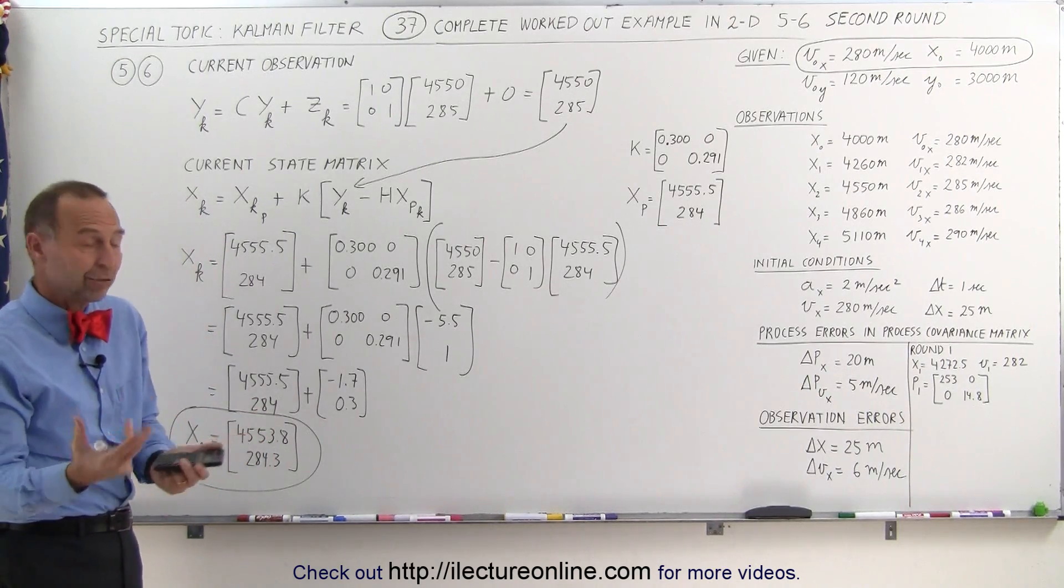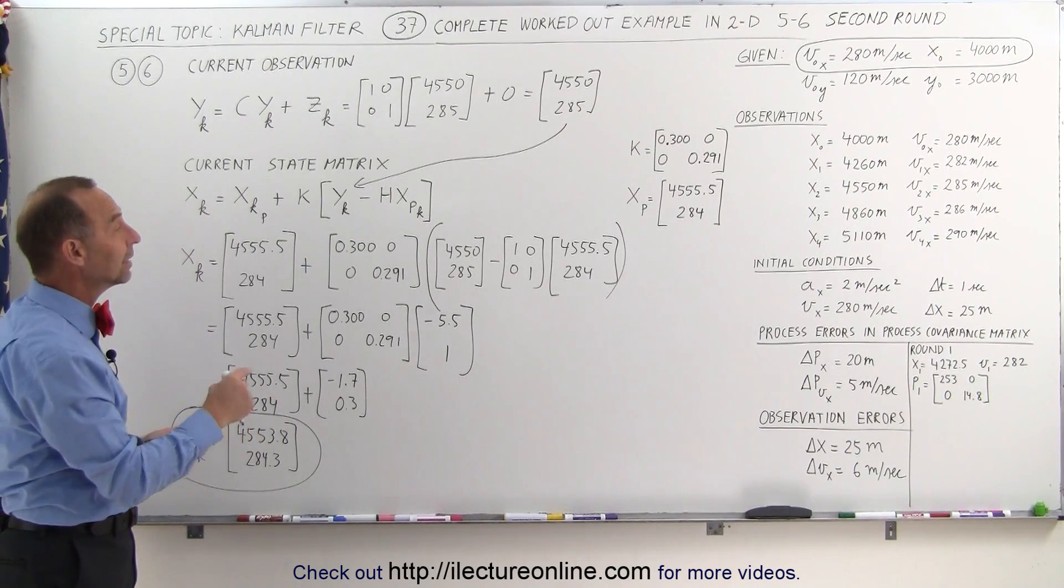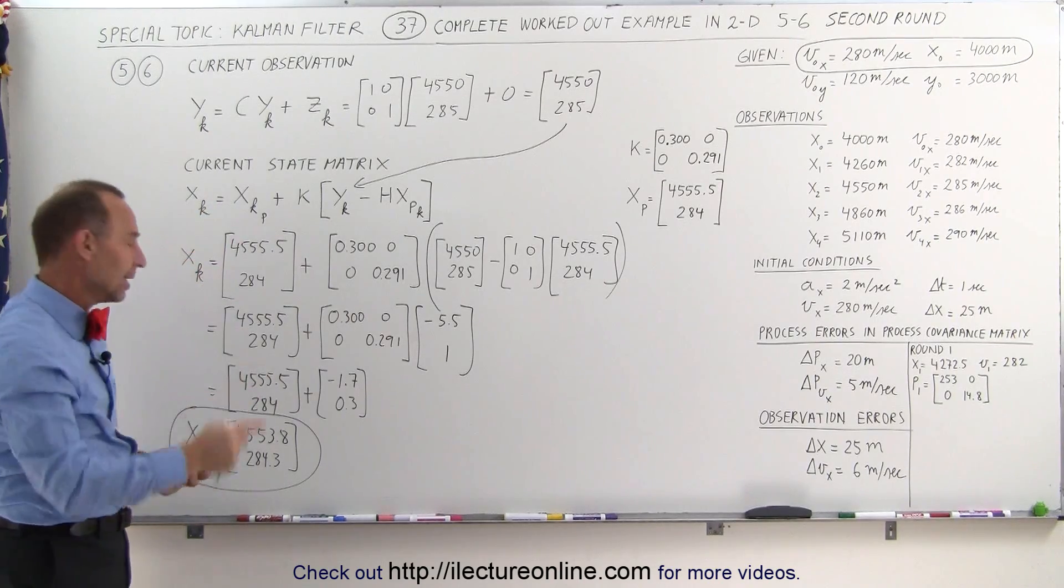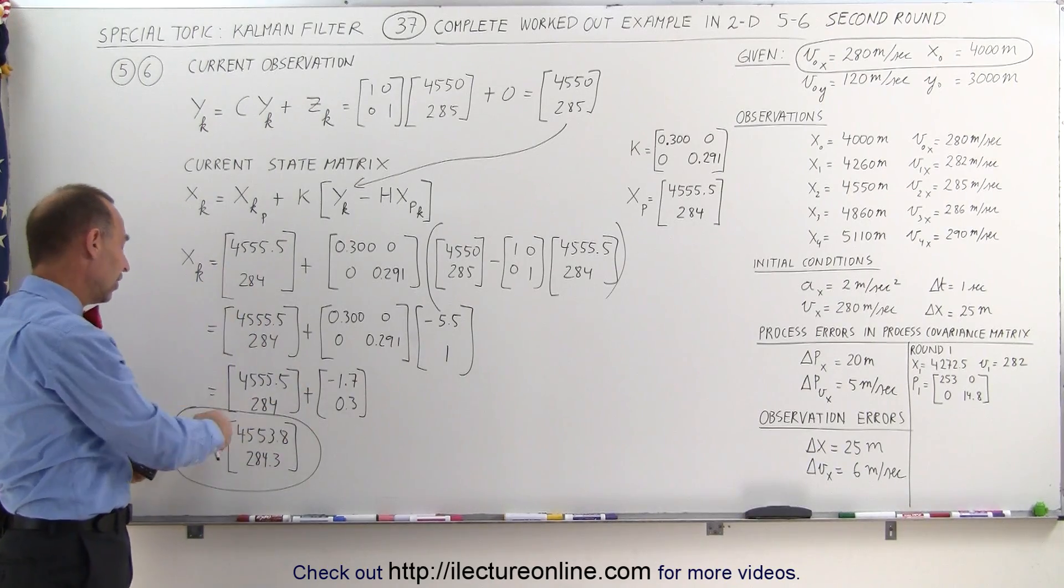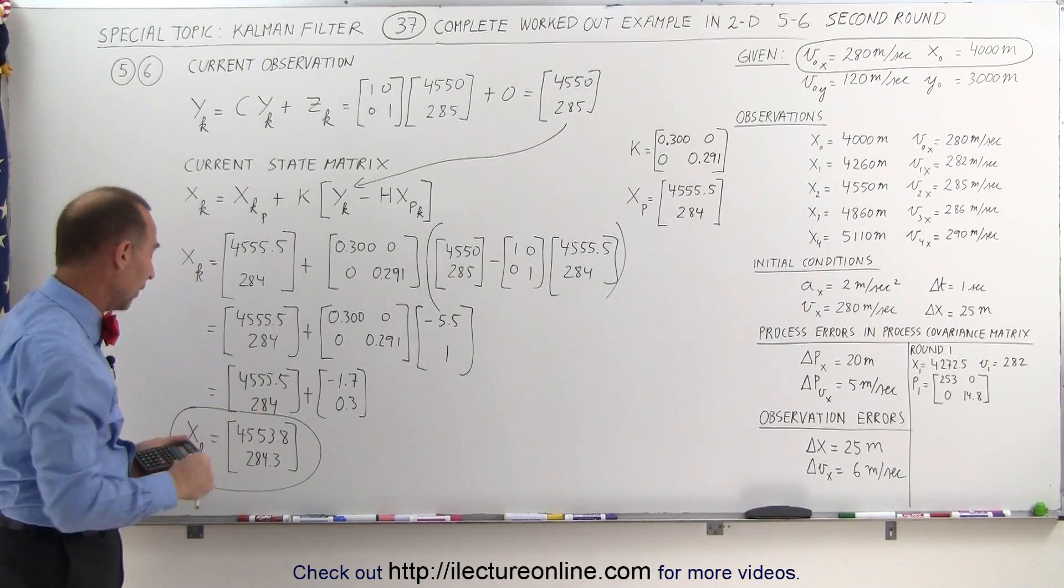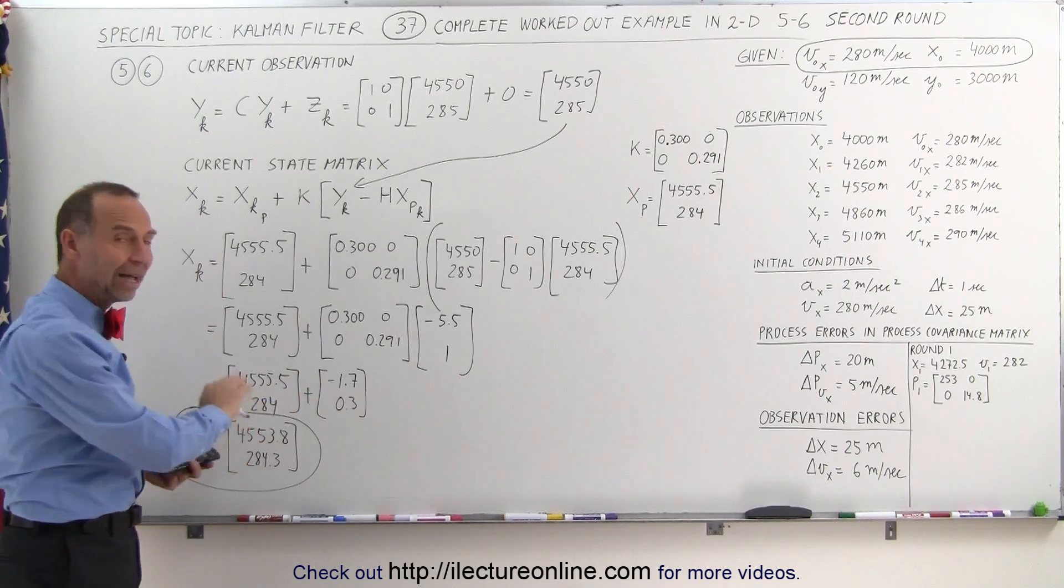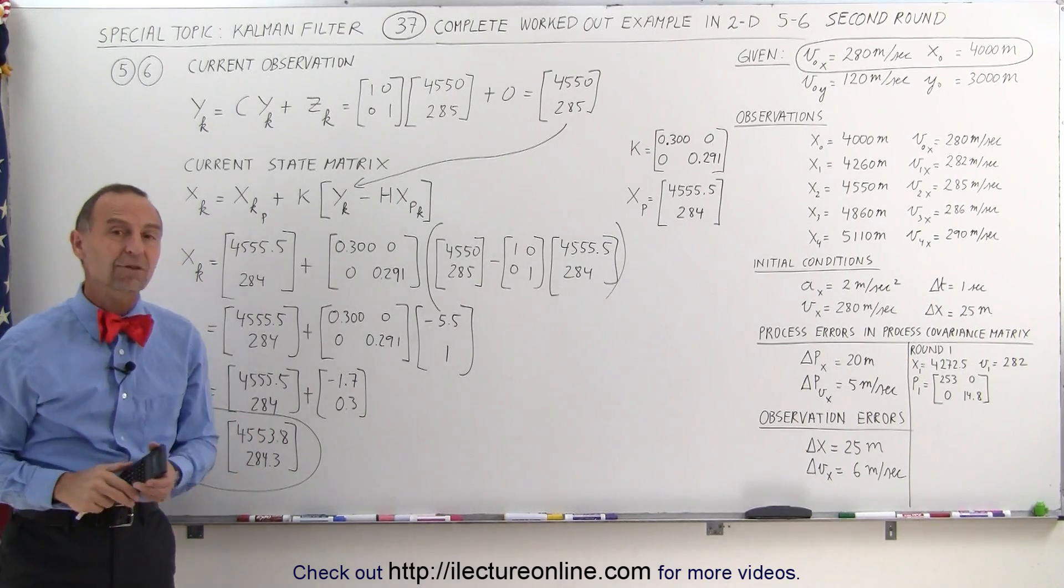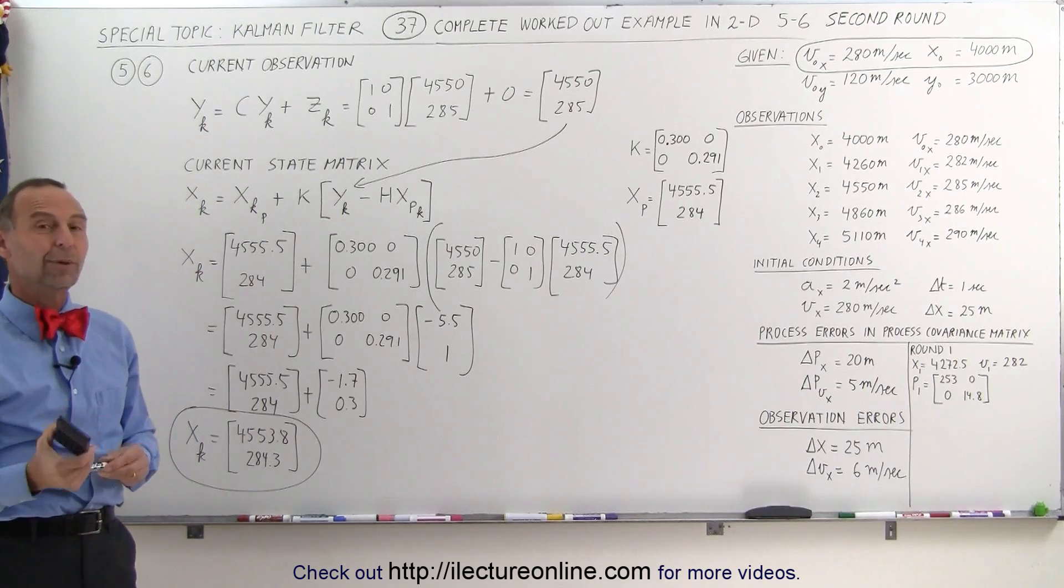So, that's actually the objective for round two, is to come up with that. Now, we still have to adjust or recalculate a new process covariance matrix to be ready for round three. And this will then become the previous state matrix for round three as we calculate the new state matrix in round three. But this tells us that using the Kalman gain, we have a new estimated position, a new estimated velocity based on the Kalman gain principles. And that's how we do that, and that's how we move forward through the round.